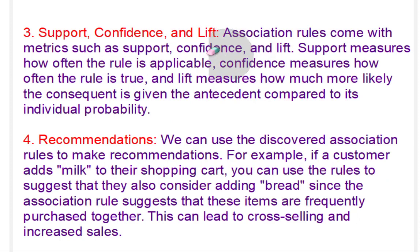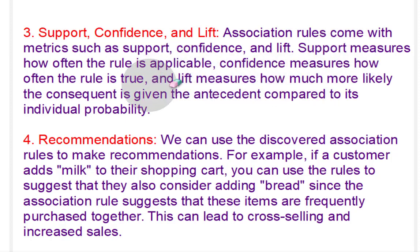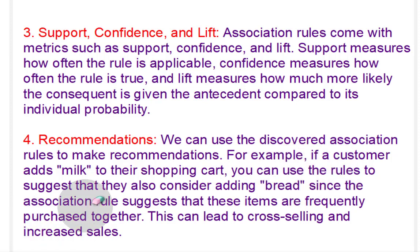We have some metrics: support, confidence, and lift. Support measures how often the rule is applicable. Confidence measures how often the rule is true, and lift measures how much more likely the consequent is given the antecedent compared to its individual probability. We can use these discovered associations and rules to make recommendations — for example, if a customer adds milk to their shopping cart, we can suggest they consider adding bread as well. This can lead to cross-selling and increased sales.